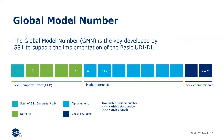In the same way as the requirement for the UDIDI is met by the GTIN using GS1 standards, the requirement for the basic UDIDI is met by the Global Model Number (GMN) using GS1 standards. The GMN is variable length, up to 25 characters long, and is made up of the GS1 company prefix, a model reference, and a check character pair. The model reference element is alphanumeric and the check character pair is case sensitive.